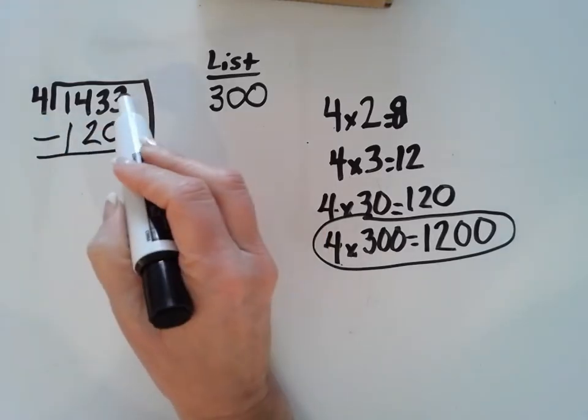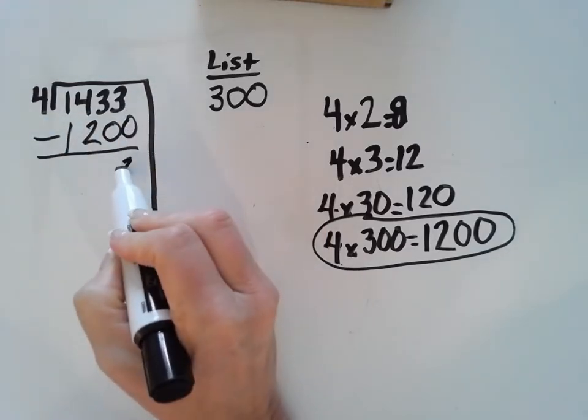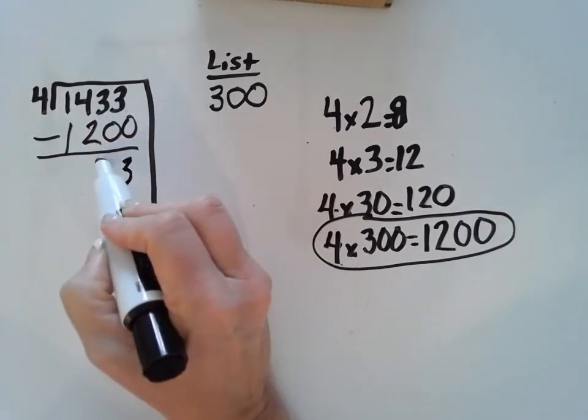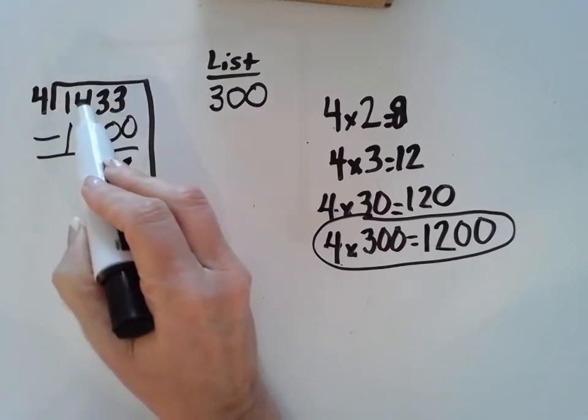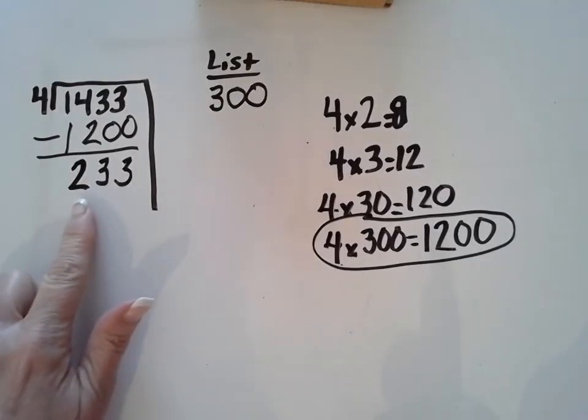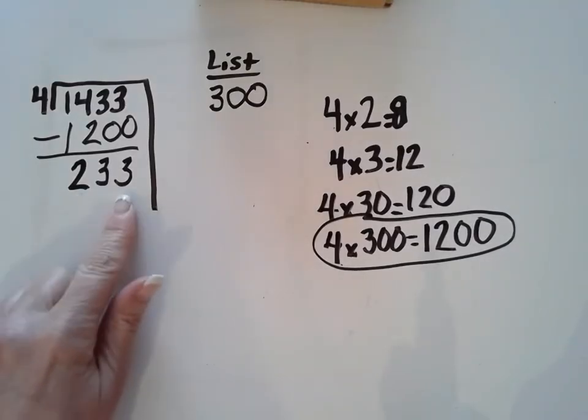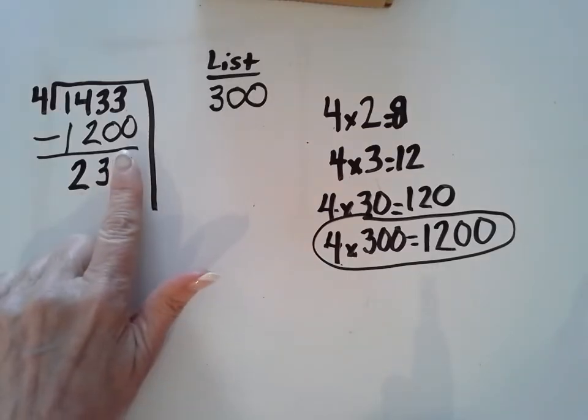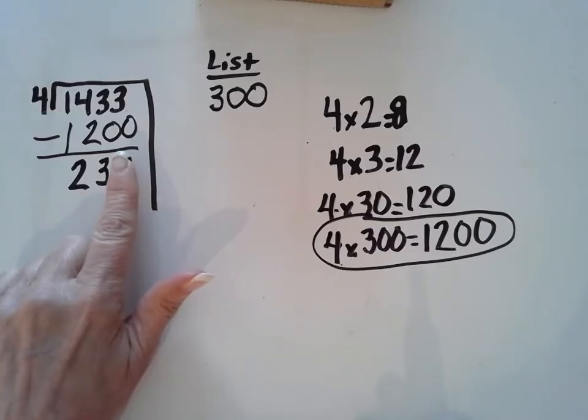Okay, 3 subtract 0 is 3. 3 subtract 0 is 3. And 4 subtract 2 is 2. Okay, now we've gotten a little smaller. Now we have a number in the hundreds. I'm going to use that strategy again by just looking at the first two digits for a second, just to help me come up with a friendly number.